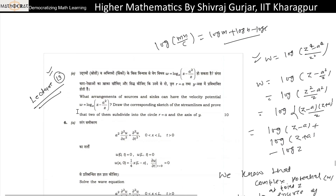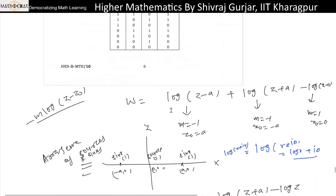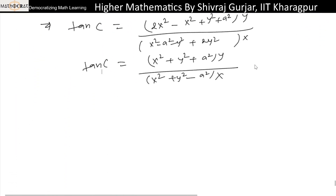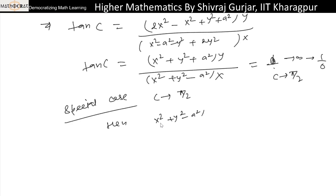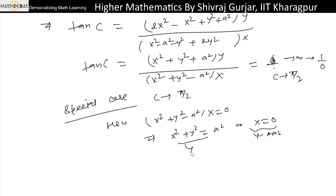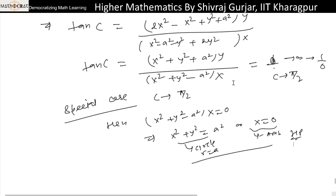We need to prove that two of the streamlines subdivide into the circle r = a and the x-axis of y. As a special case, if we take c = π/2, then tan(c) approaches infinity, meaning 1/0. That means x·(x² + y² - a²) = 0. This gives x = 0, which is the y-axis, and x² + y² - a² = 0, which is nothing but the circle of radius a. So these are the two streamlines we were asked to prove.